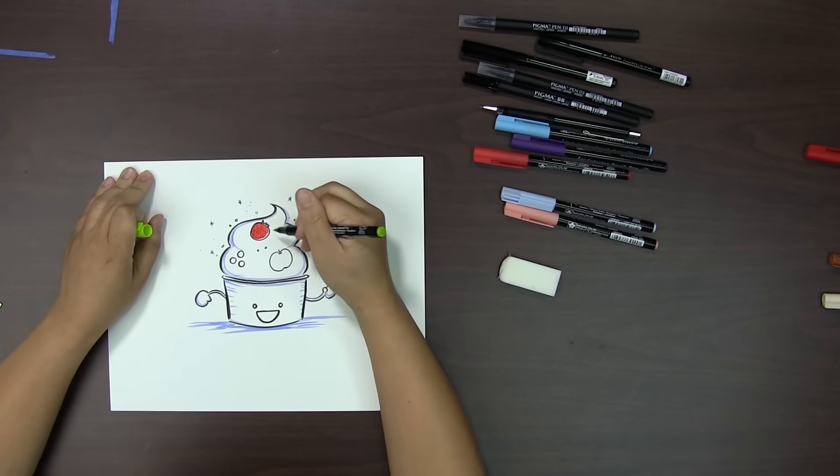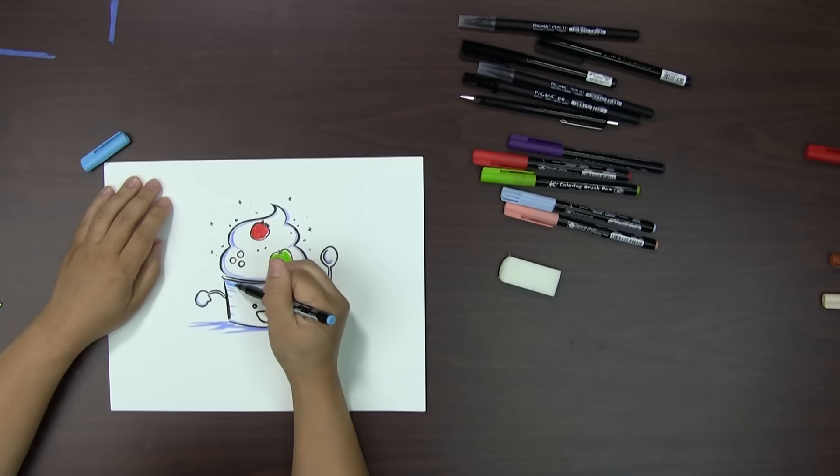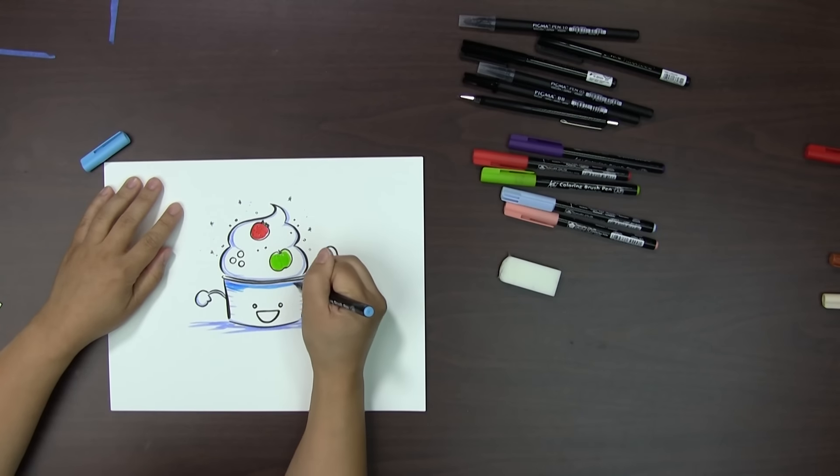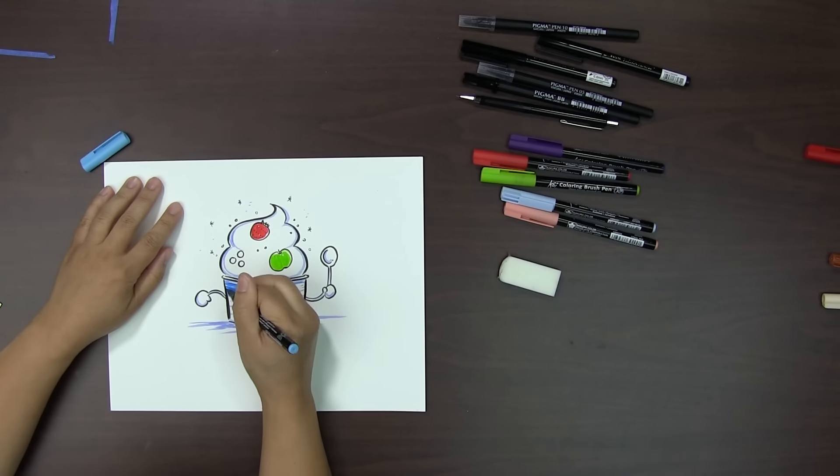For coloring in the strawberry and apple toppings, I'm just filling them in with vermilion and yellow-green markers. And next, I'm going to add in sky blue, which is a little bit darker, to the base cup. And I'm using a line texture technique.